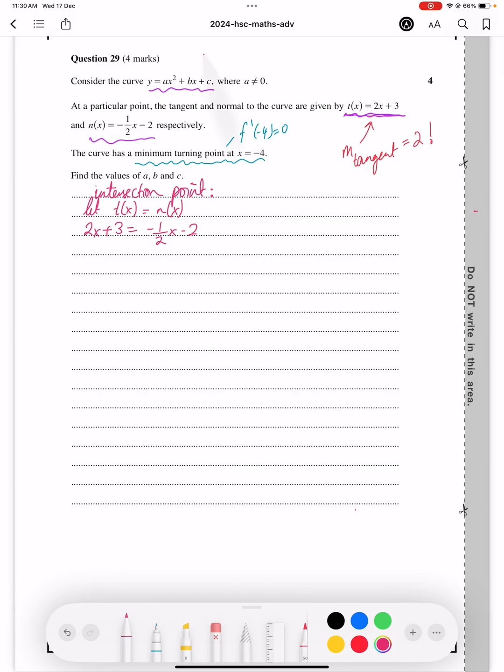Question 29 of the 2024 paper asks us to find a, b, and c in the original equation. So first of all, we're going to find the intersection point between your tangent and your normal.